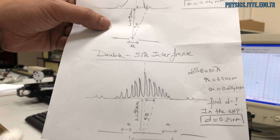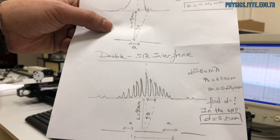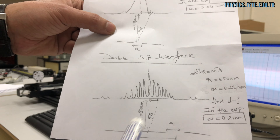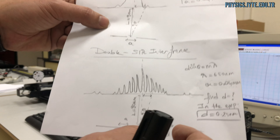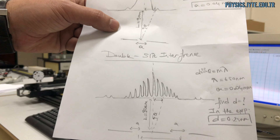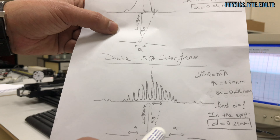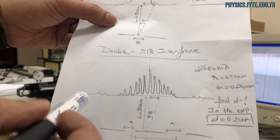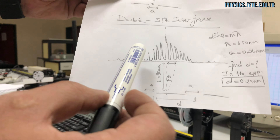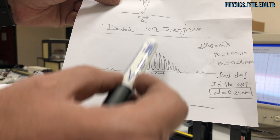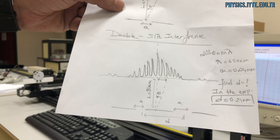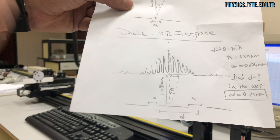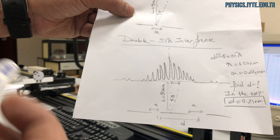The second part is the double slit interference. We have two different slits in this part. Their separation will be given by D, and their width is A. As you see, double slit interference is different from the single one — there are too many peaks in the graph, as we will see.